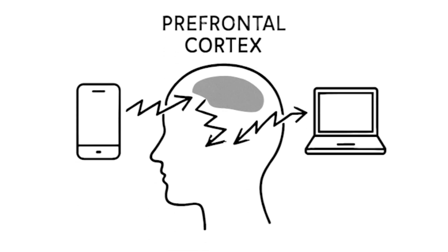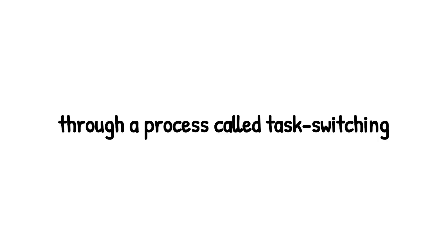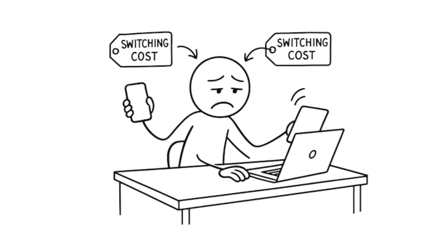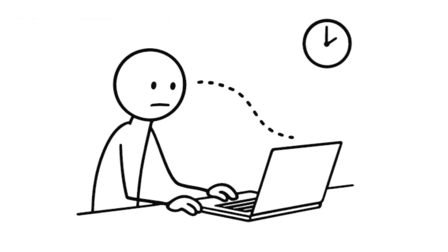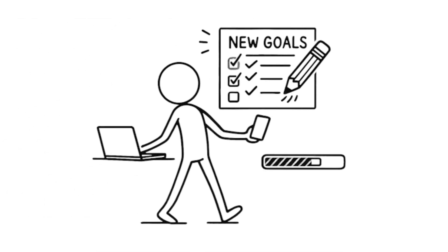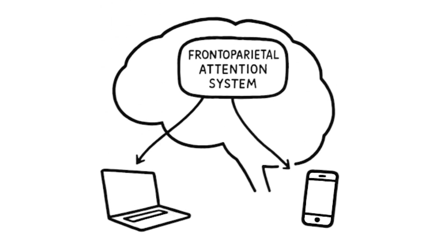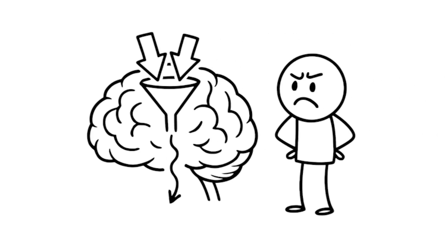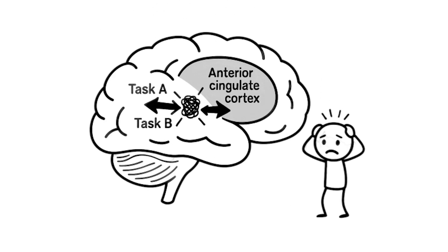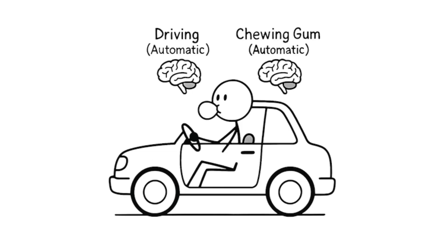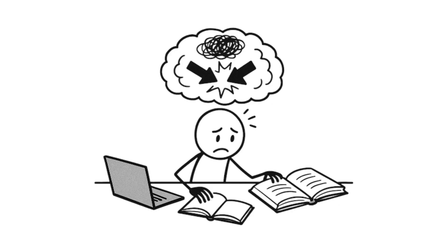Each switch triggers what neuroscientists call a switching cost. Your brain needs time to disengage from one task, update its goals, and re-engage with the new task. This happens because of limited attentional resources controlled by networks like the frontoparietal attention system. Brain imaging shows that attempting to multitask creates bottlenecks in information processing, particularly in the anterior cingulate cortex, which monitors conflicts between competing demands. The result? You're slower overall and make more mistakes. You can drive and chew gum simultaneously because those are automatic processes controlled by different brain regions. But trying to consciously process two demanding cognitive tasks creates interference.